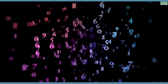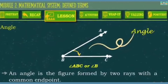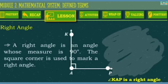Next, we're going to define angle. An angle is a figure formed by two rays with a common endpoint. The figure is angle ABC or angle B. Based on the figure shown on your screen, this is also an angle because it has two rays with a common endpoint. But what kind of angle is this? This angle is what you call a right angle. A right angle is an angle that measures 90 degrees. The square corner is used to mark a right angle. The given figure, angle KAP, is a right angle.